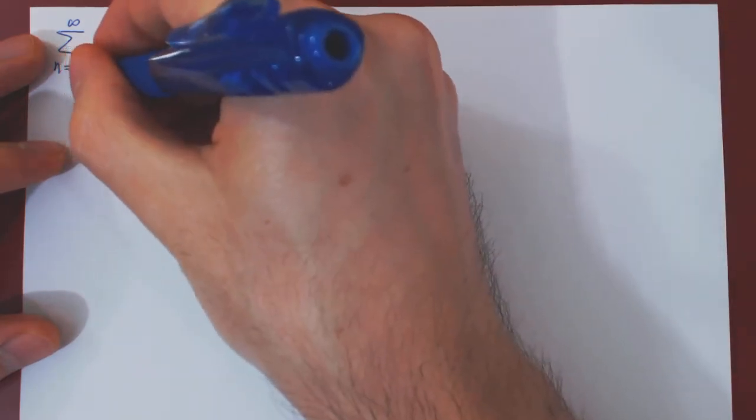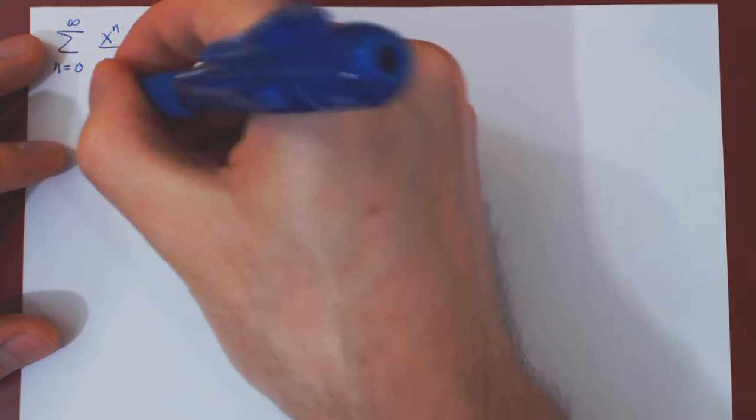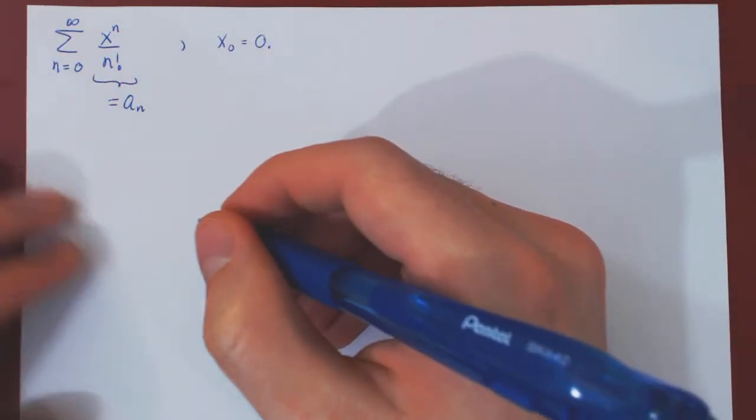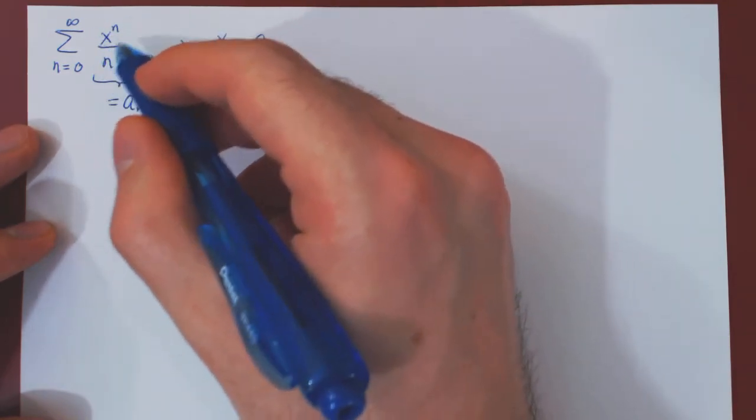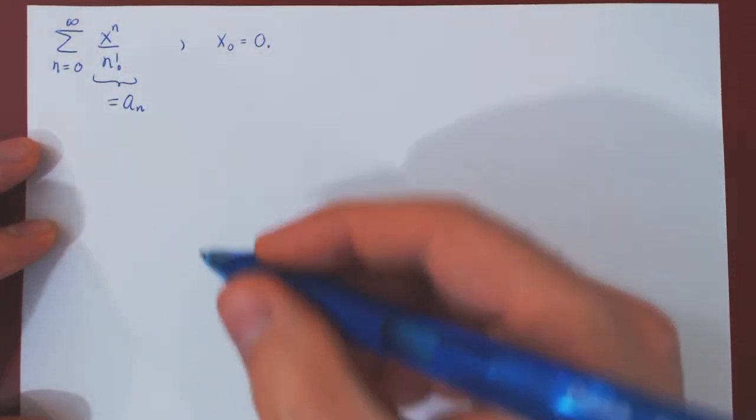So this is a_n, the sequence of terms we are summing over, and now we will apply the ratio test to try and figure out for which values of x the given power series converges.